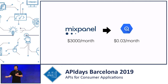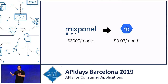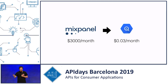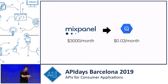As we moved from Mixpanel to Google BigQuery, because BigQuery charges only for the amount of data processing you actually do, we ended up paying something like $0.03 a month for Google BigQuery for the same — in fact more — work, compared to the $3,000 a month we were paying before for essentially fewer capabilities.